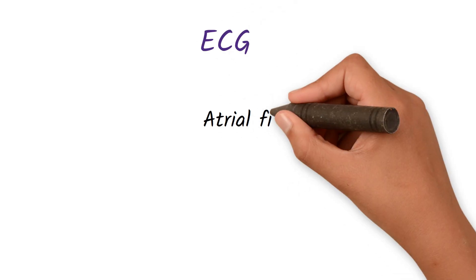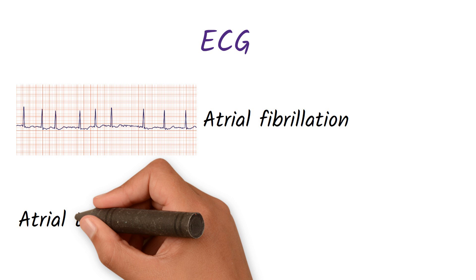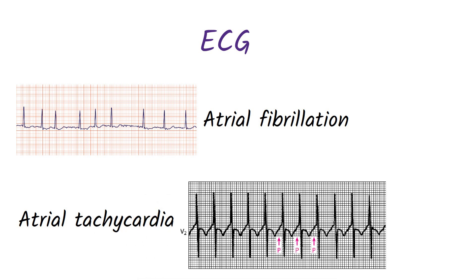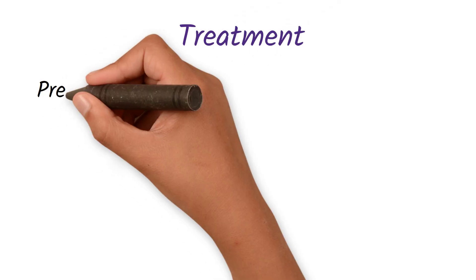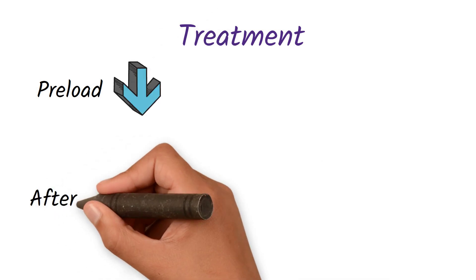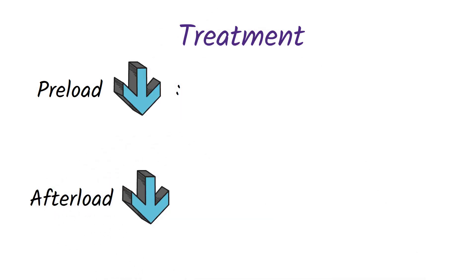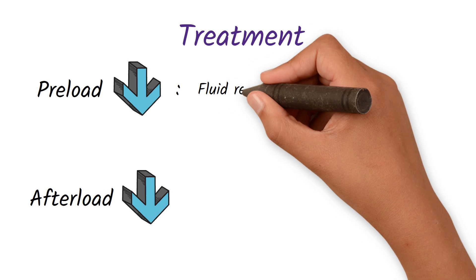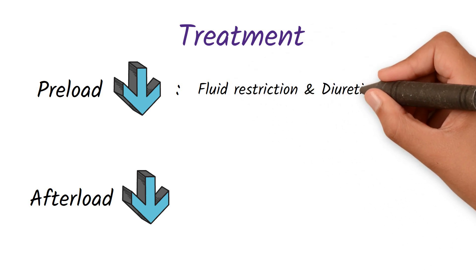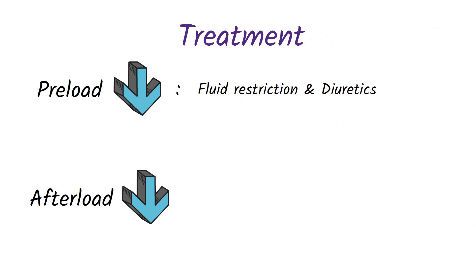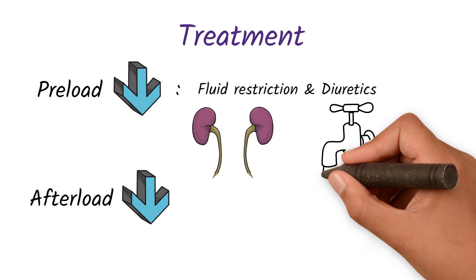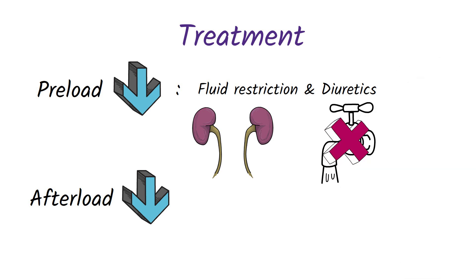On ECG there will be features of atrial fibrillation and atrial tachycardia. The treatment of dilated cardiomyopathy involves decreasing the preload and decreasing the afterload. To decrease the preload we restrict fluid intake and give diuretics.